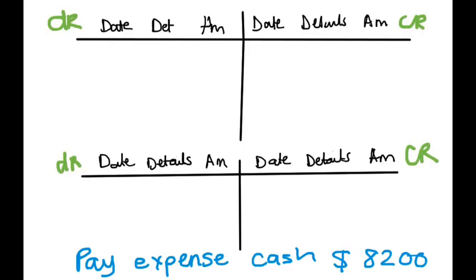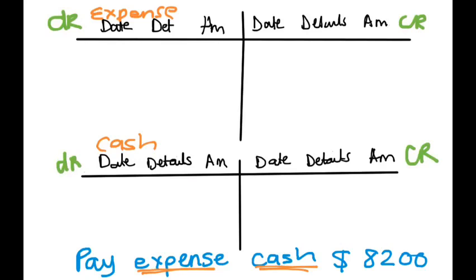Let's move to another example: paid expenses in cash. What are the two accounts? The double entry system means every transaction has two accounts. Here we have your expense account and your cash account. The expense can be anything — electricity, rent, water bill. You paid your expense in cash, $8,200. The first account is your expense account and the second is your cash account.